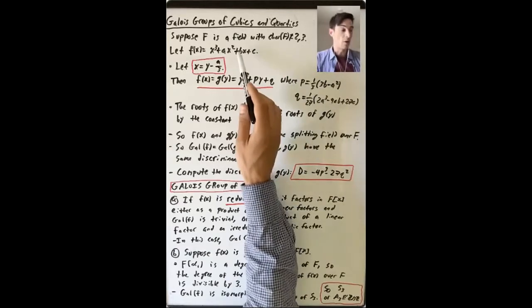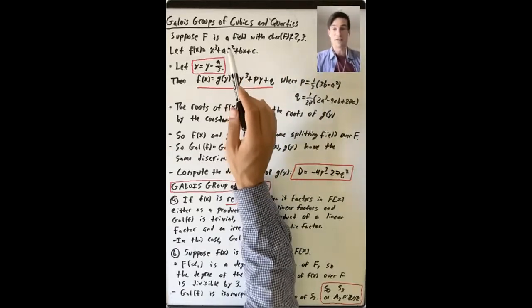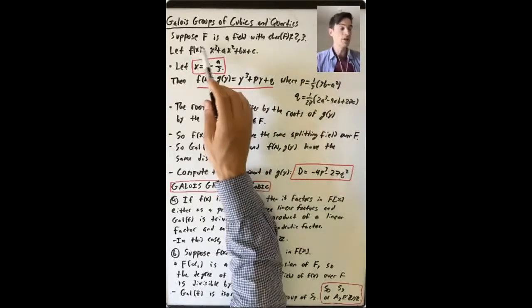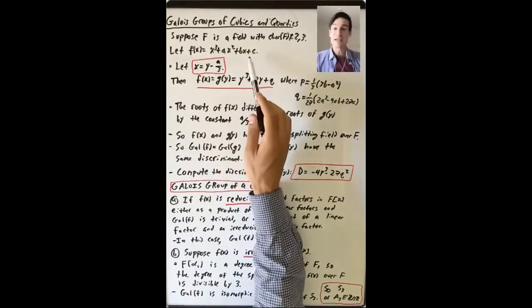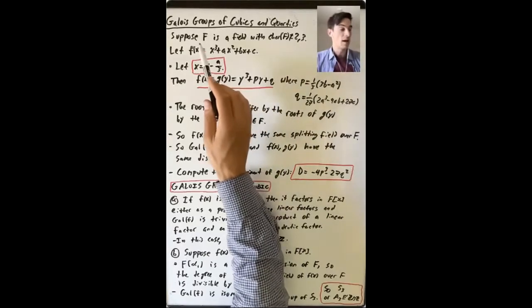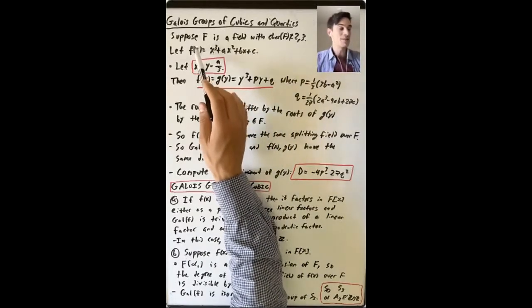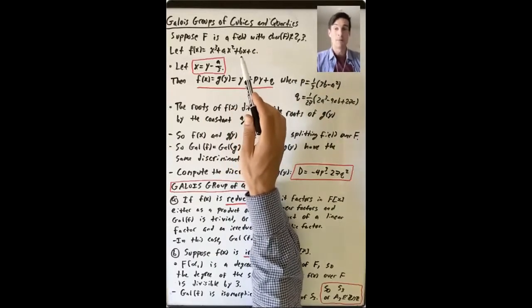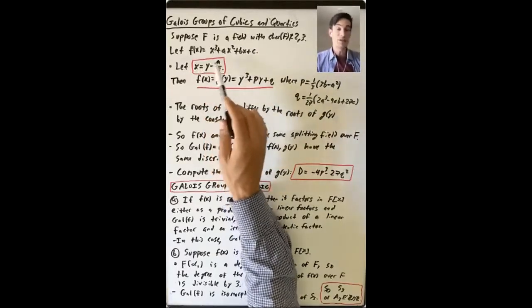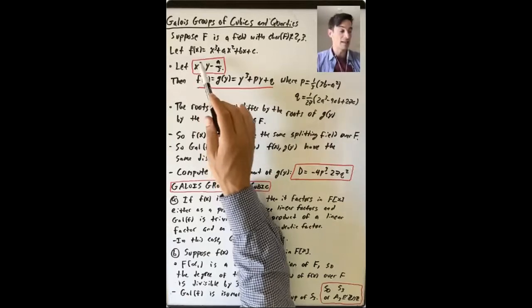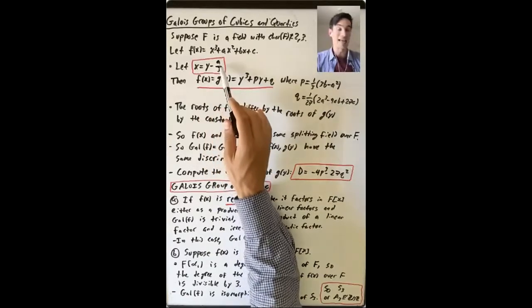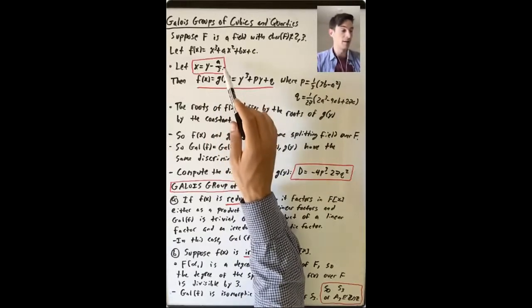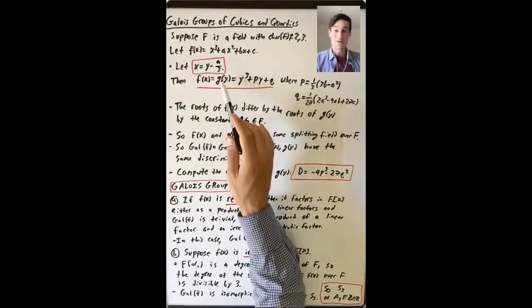Why are we supposing the characteristic of F is not 3? Because our goal is going to be to understand Galois groups of cubic polynomials first. So our polynomial will be x³ + ax² + bx + c, where a, b, and c are in our field F, and we want to compute the Galois group — the Galois group of the splitting field of this polynomial over F. What we're going to do is understand this by means of a related but simpler polynomial. We're going to do the substitution where we let x equal y minus a over 3.